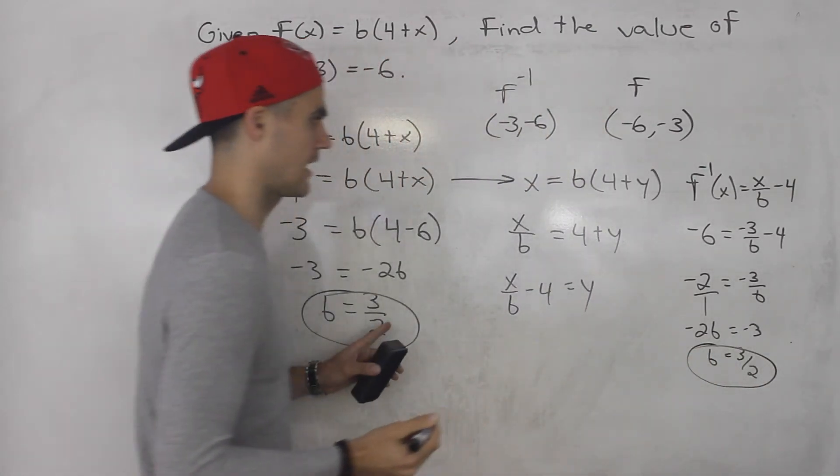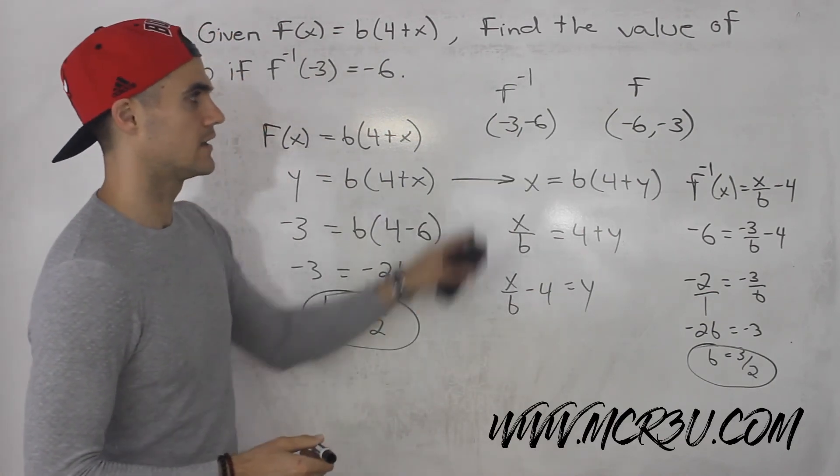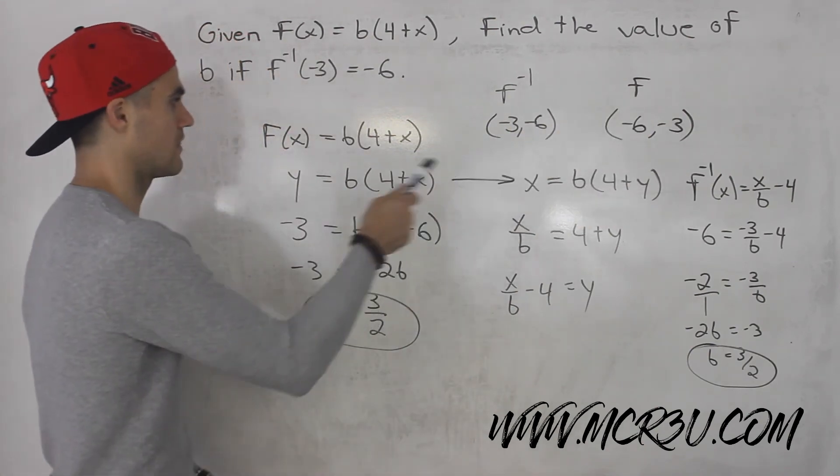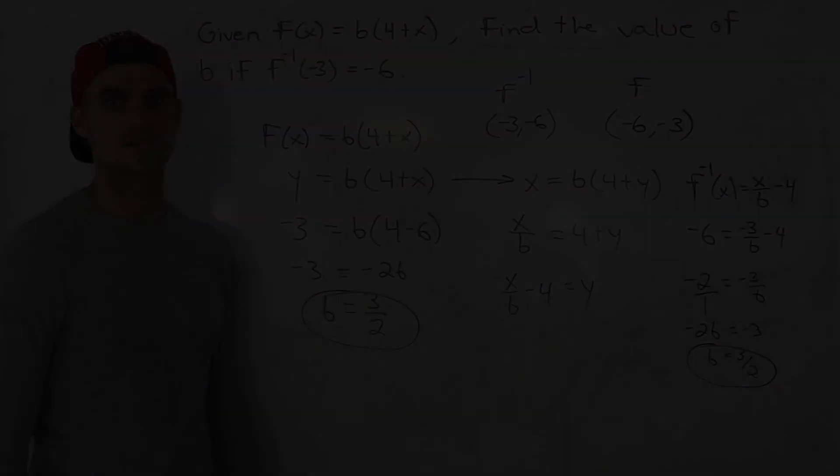So same thing. And look how much more work it is to find the inverse first and then plug in that point. Easier to just switch the coordinates of the point that's on the function, plug in that coordinate here, and then isolate for b. You get the same answer.